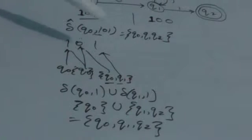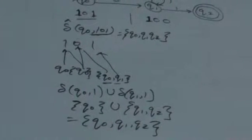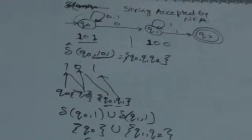Now we have to check the second string 100. Again, for this we will use the extended transition function. The current state is Q0 and we have to apply string 100 to the initial state Q0.